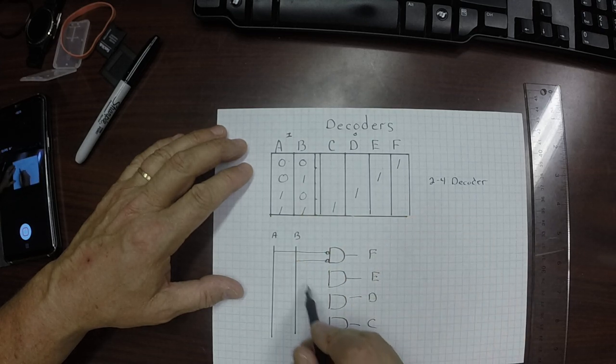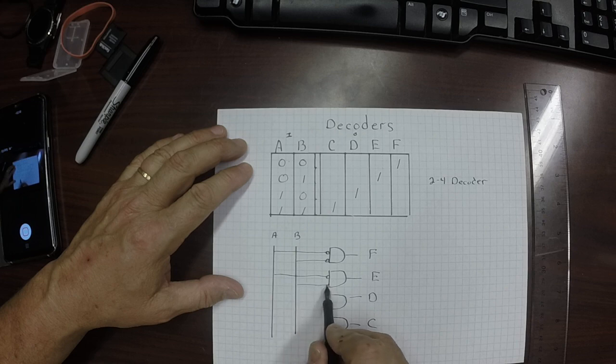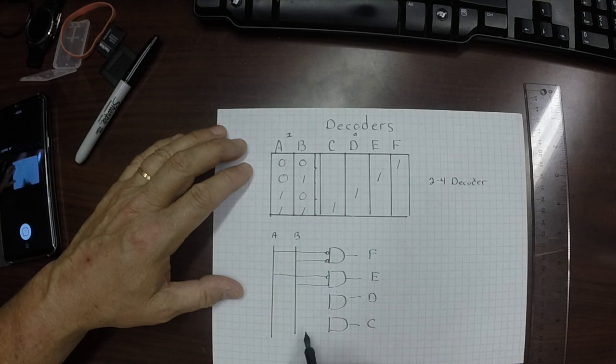How about the E wire? Well, we bring that in. A is negated. And then we bring in the B, which is not. It's a 1. And that will be turned on.